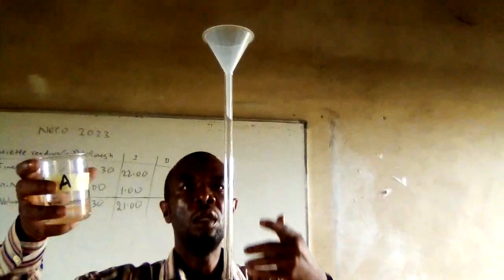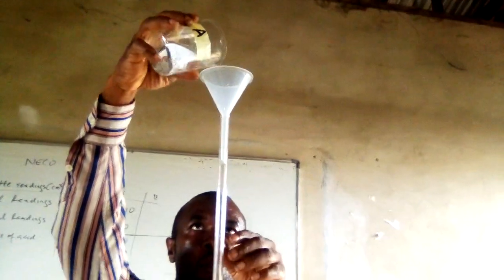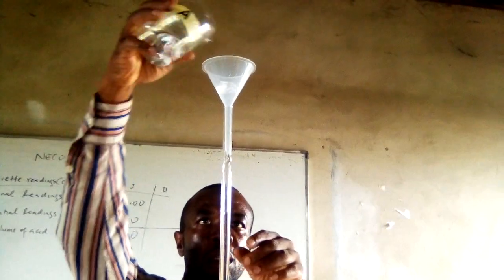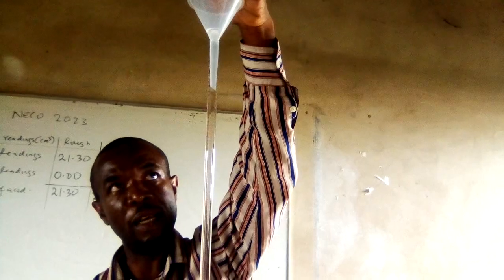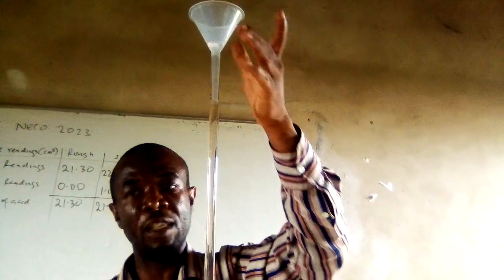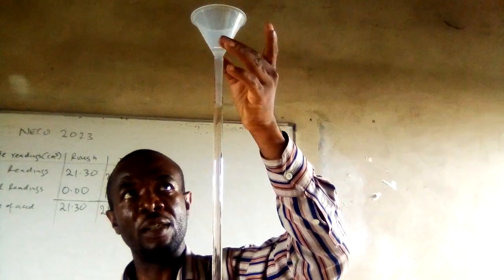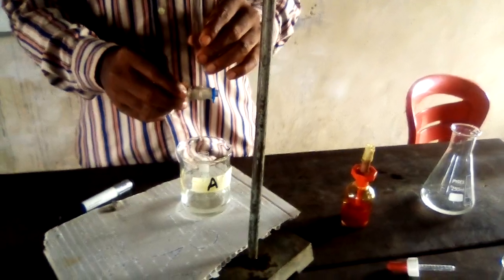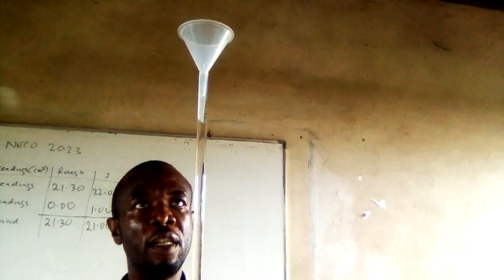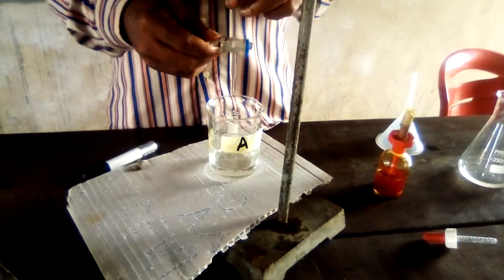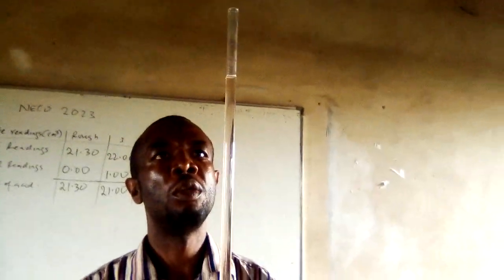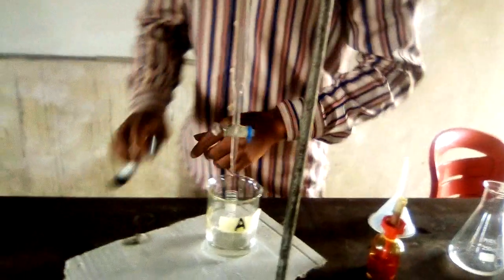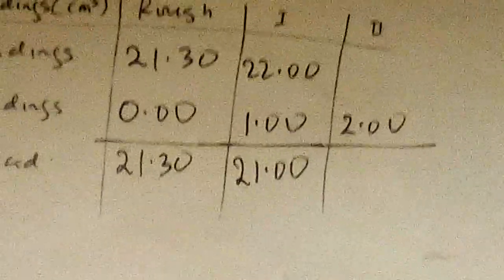For the second accurate titration, we add more acid to the burette. There's some acid left in the funnel — we leave the funnel in place and reduce the level carefully until the funnel is clear of acid. We then set the initial reading to 2.00 cm³.